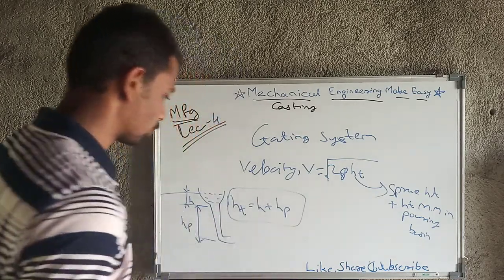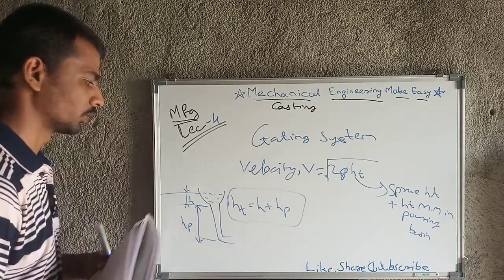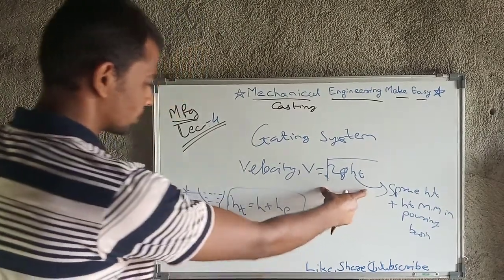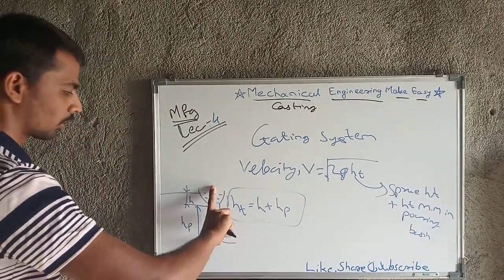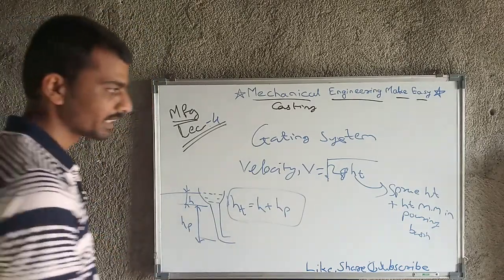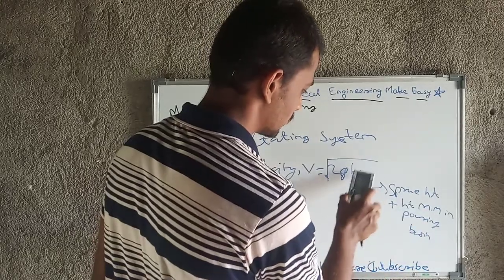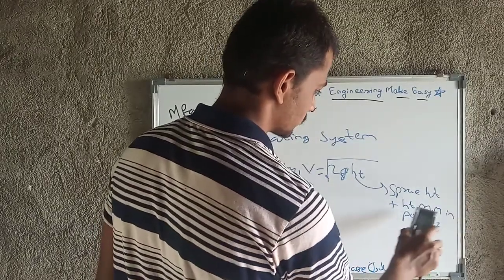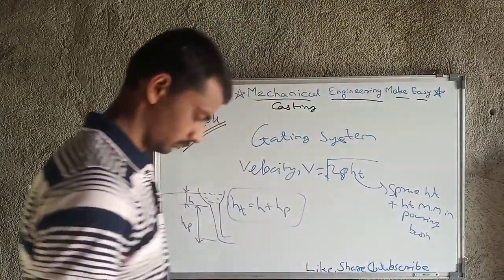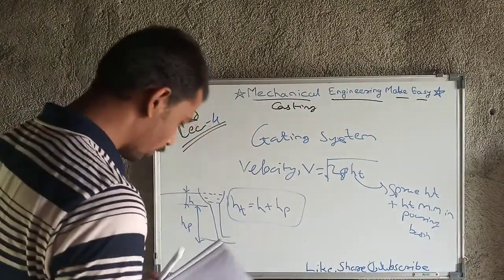Note down this formula and draw the figure. The meaning of Ht is the sprue height plus the height of molten metal in the pouring basin. Then the next concept is pouring time.